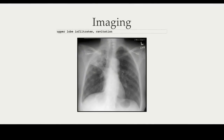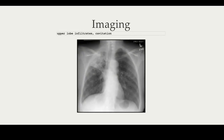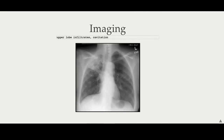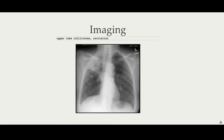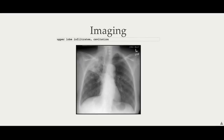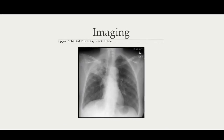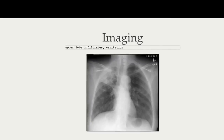Finally, and perhaps the diagnostic test that people will be most familiar with, is imaging. The classical chest X-ray of a patient presenting with tuberculosis should not be forgotten — you can see an example of one here — and the classical things to look for are upper lobe infiltrates and cavitation.